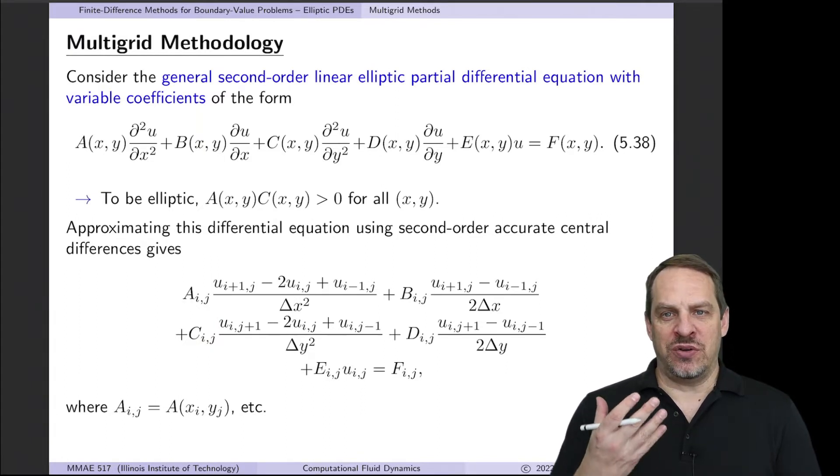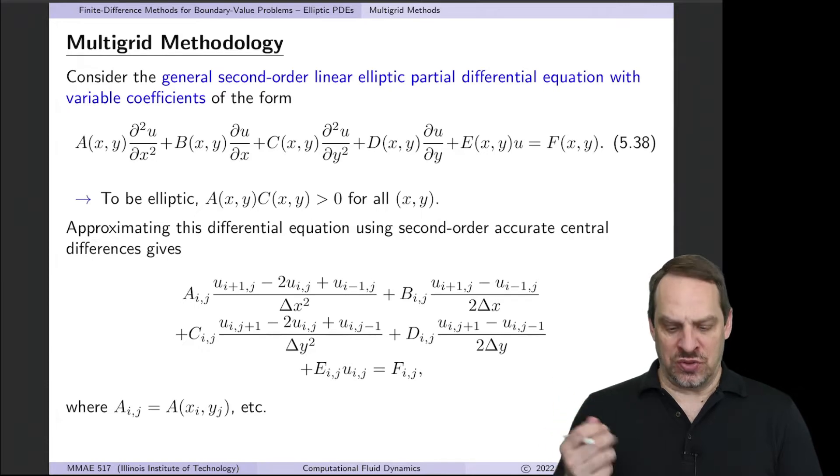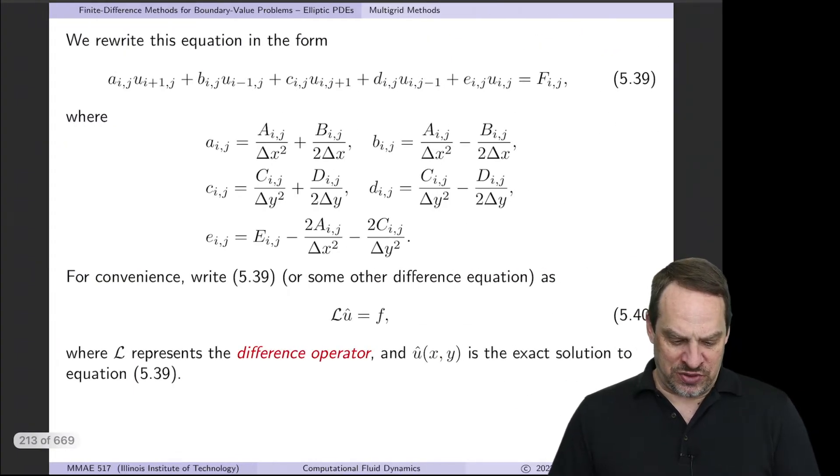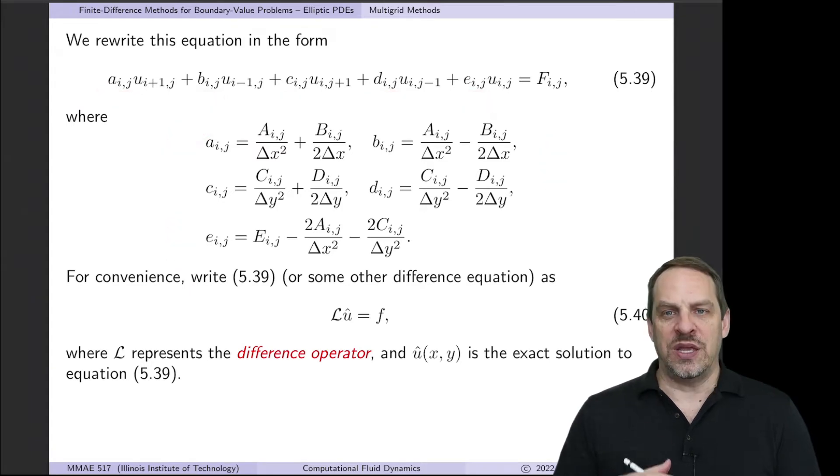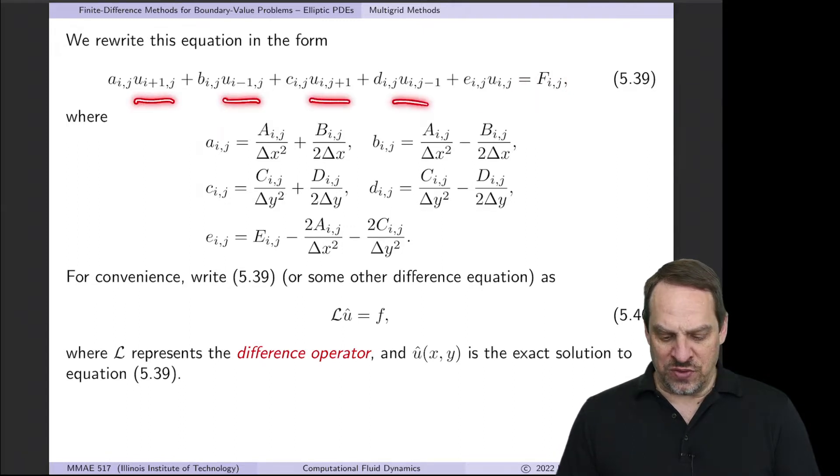If we gather together everything times each of our u's, we get our finite difference equation. So it's everything times u_{i+1,j}, u_{i-1,j}, u_{i,j+1}, u_{i,j-1}, and u_{i,j}. The little a, b, c, d, and e coefficients you can see here, and they encapsulate all those variable coefficients. And again, we have the right-hand side. So this is our usual 1, 2, 3, 4, 5 point finite difference stencil.